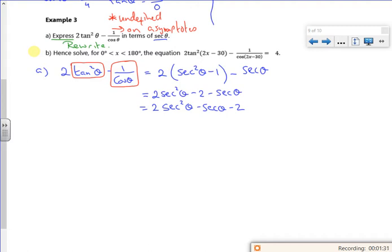So that's Part A done. It's all in terms of secant. Right, Part B says hence solve it. So if you look, so people would fall apart on this bit. This is the same as that. But instead of theta, it's got 2x - 30.